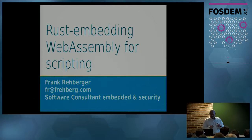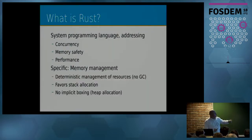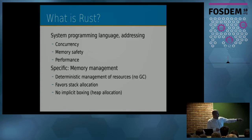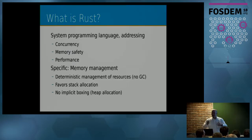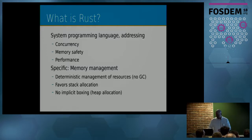I assume everybody here knows Rust, but just to repeat: its key features are support for concurrency, memory safety, performance, and especially memory management — deterministic management of resources. There is no garbage collector built in, which is a very important feature. It favors stack allocation, no implicit boxing, so there is no hidden allocation of heap memory causing delays in processing.